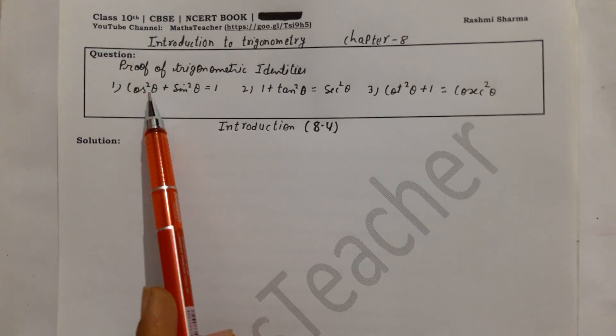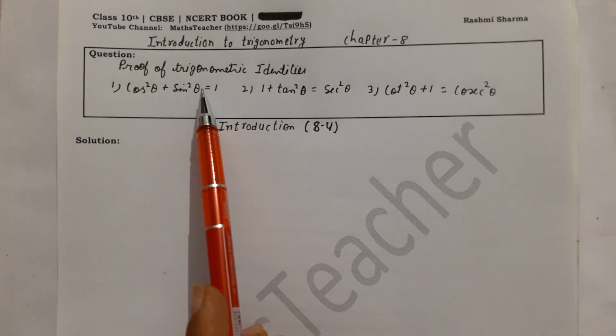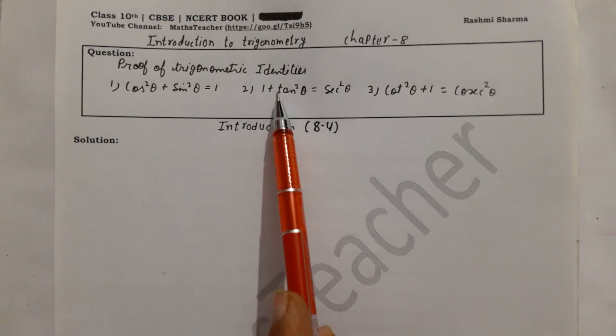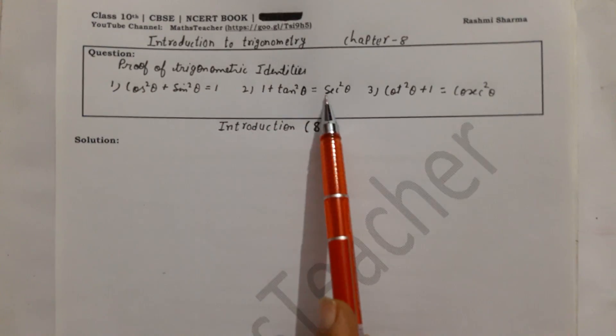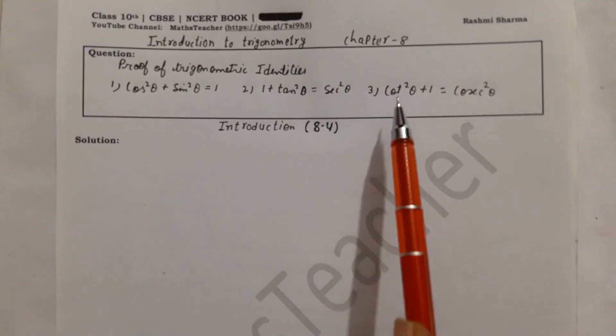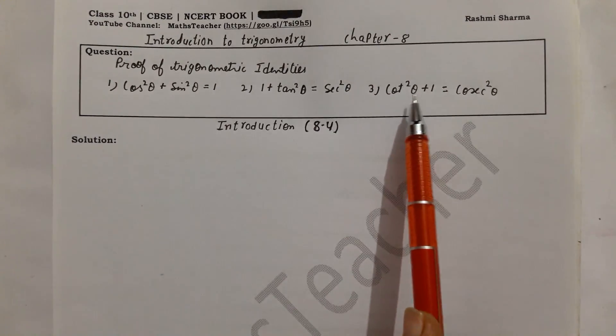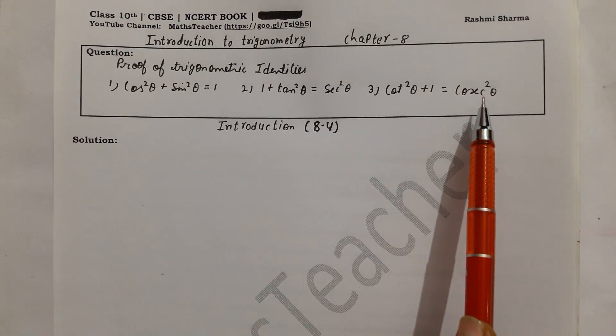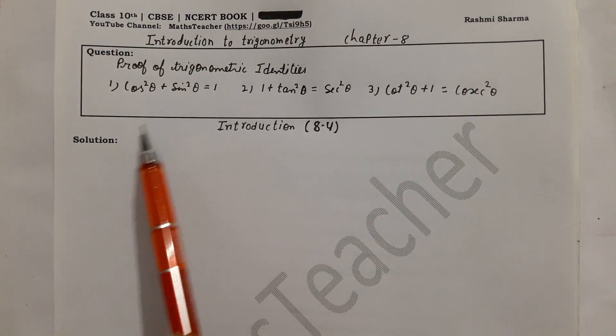The three identities are: first, cos²θ + sin²θ = 1; second, 1 + tan²θ = sec²θ; and third, cot²θ + 1 = cosec²θ.